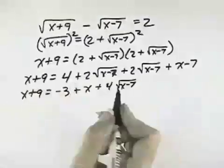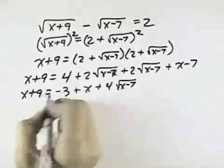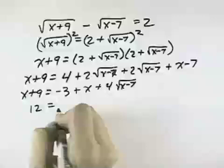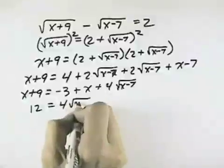So I'm going to add 3 and subtract x from both sides. When I add 3, I get 12. When I subtract x, the x's cancel, and then I have on the right 4 times the square root of x minus 7.